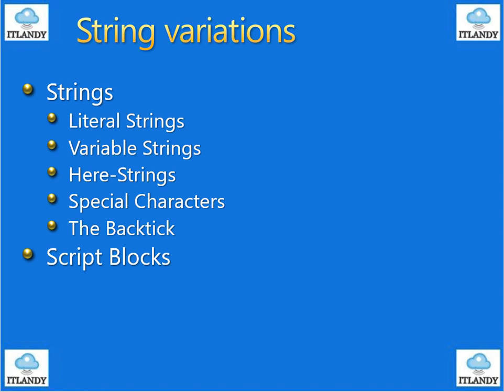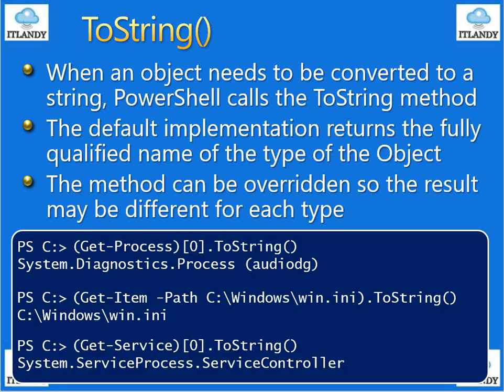Today we'll continue with the rest and see what info we can gain around it. So now jumping back to the toString method — when an object needs to be converted to a string, PowerShell calls the toString method. The default implementation returns the fully qualified name of the type of the object. The method can be overridden so that the result may be different for each type.